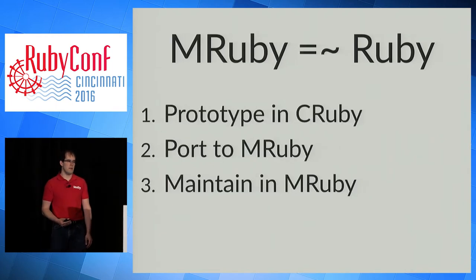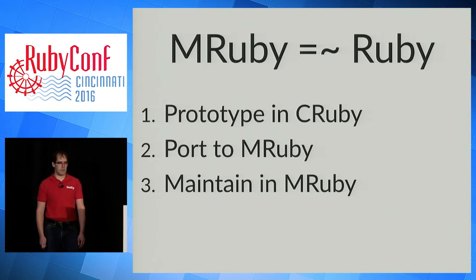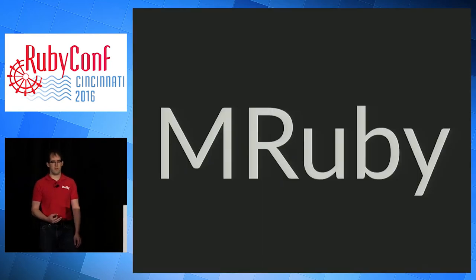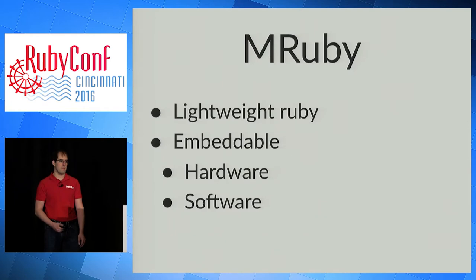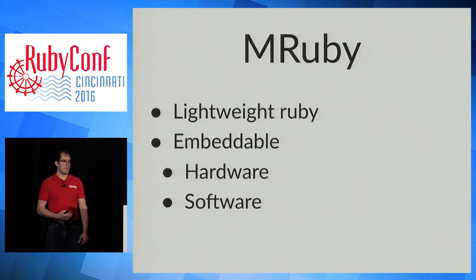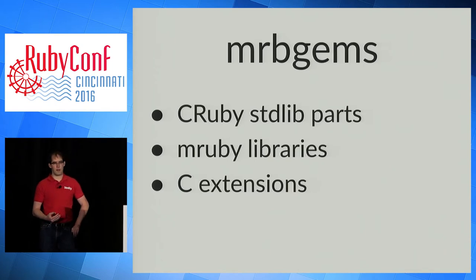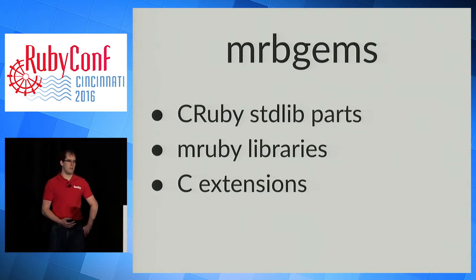MRuby is very similar to CRuby, so you can start with a prototype in CRuby, port that to MRuby, and continue maintenance in MRuby. MRuby is a lightweight Ruby implementation — you only need to use as much of the language features as you need, which keeps the language and binary size smaller. It's also designed for embedding: you can run Ruby on low-resource hardware or embed it into other software without the hassles of embedding CRuby. Like CRuby, MRuby has libraries called gems, and ships with a limited standard library, so you use a gem to get the full set of array features.